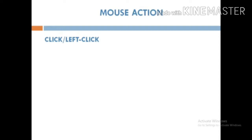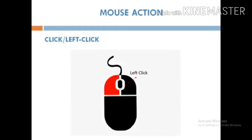Pressing the left mouse button once is called clicking. This selects an item. Whenever we press the left mouse button one time, we are clicking. When we want to select any item, we press the left mouse button once — one click — and that item gets selected.